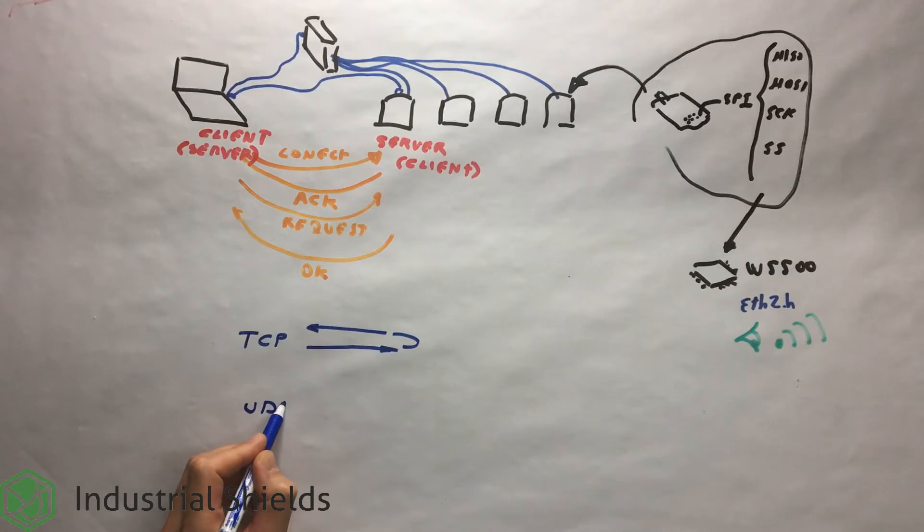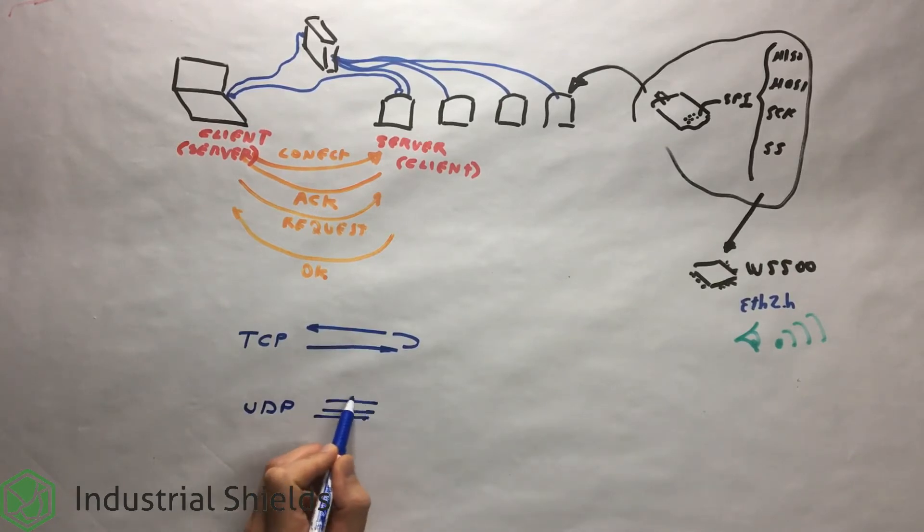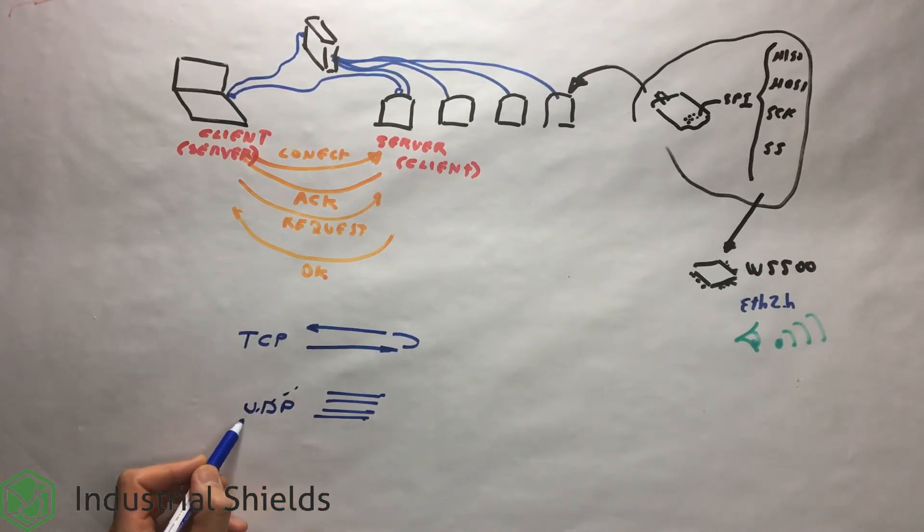In the Internet Protocol family, UDP provides a simple interface between the network layer and the application layer. UDP does not grant guarantees of the delivery of your messages. Some of the main characteristics of the UDP would be the following.